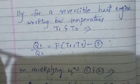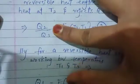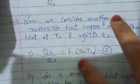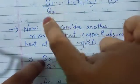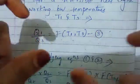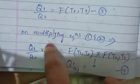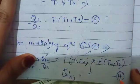Now there is an interesting point. If we multiply equations 1 and 2, that is Q1 by Q2 multiplied by Q2 by Q3, the Q2 terms cancel and we get Q1 by Q3. We already have Q1 by Q3 from equation 3. So multiplying: Q1/Q2 × Q2/Q3 = f(T1,T2) × f(T2,T3), which gives Q1 by Q3 equal to f(T1,T2) × f(T2,T3). Let this be equation number 4.